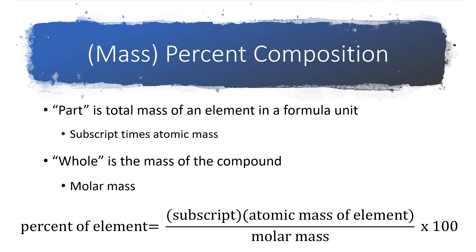So if we're looking at the mass percent composition and we think of it in terms of a part over a whole, the part would be the total mass of an element, just a single element in a formula unit. We'll get that by looking at the formula for the compound and grabbing the subscript on that element and multiplying the subscript times the average atomic mass from the periodic table for that element.